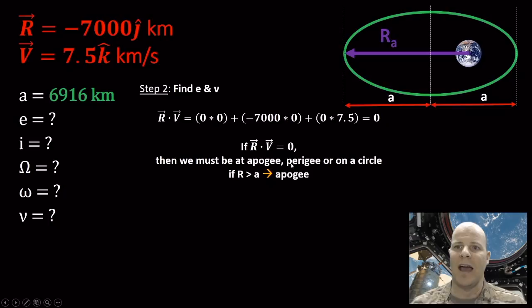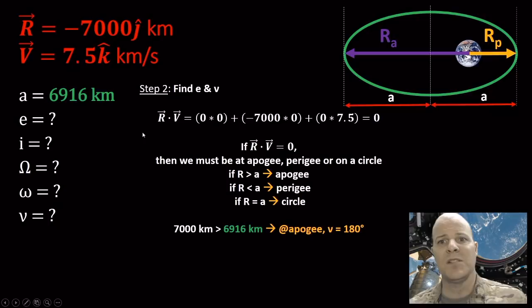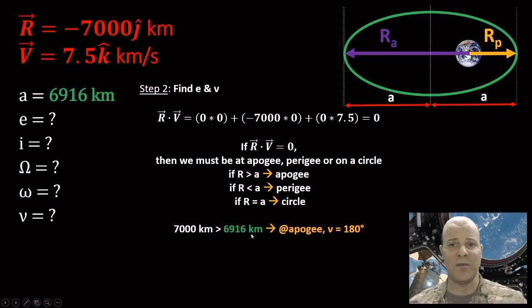So if R dot V equals zero, we check: if R is greater than A we're at apogee, less than A we're at perigee, equal to A we're on a circle. In our situation, our current position is 7000 km from Earth — that's larger than our semi-major axis of 6916 km calculated in step one. Therefore, we must be at apogee.